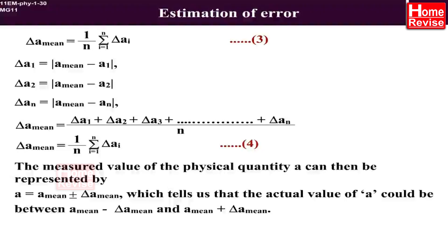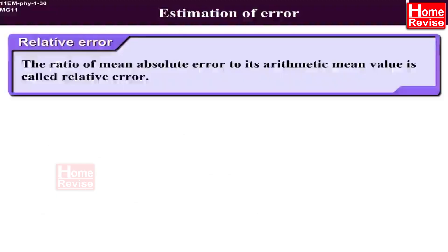and A_mean plus ΔA_mean. The ratio of mean absolute error to its arithmetic mean value is called relative error.